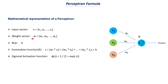The input features are in the form of a vector, and weights are also in the form of a vector, whereas bias is a scalar — a single numerical value. In the summation function, you take the product of each weight and its corresponding input feature, then add the bias. Once you have this summation, you apply an activation function. Here we're going to build a perceptron with a sigmoid activation function, whose formula is 1 divided by 1 plus e to the power of minus z.